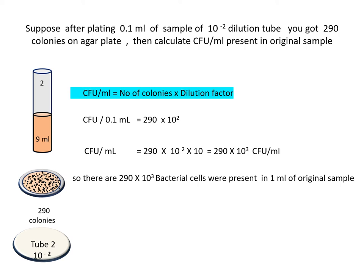Let's calculate the colony forming units per ml present in our original sample by using the colony count. Suppose after plating 0.1 ml of sample of the 10 to the power minus 2 dilution tube, you have got around 290 colonies on the agar plate. Then how do we calculate the colony forming units per ml present in the original sample?